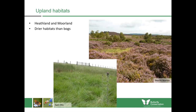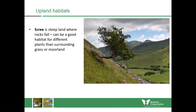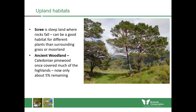There's also heathland and moorland which is dominated by heathers or grasses. These tend to be drier than bogs and again developed through the clearance of trees thousands of years ago. There's also scree, which tends to be steep land where rocks can fall — a really excellent habitat for many different wildflowers which can pop up whenever the land is disturbed. There's also a type of ancient woodland called the Caledonian pinewood, which once covered much of the Scottish Highlands and now only about five percent remains.